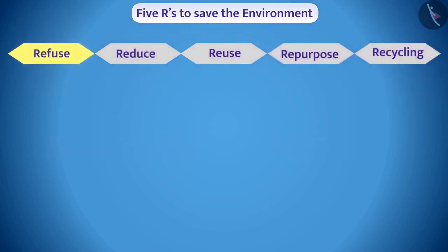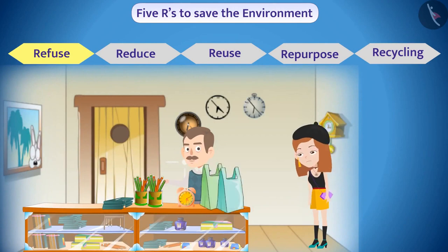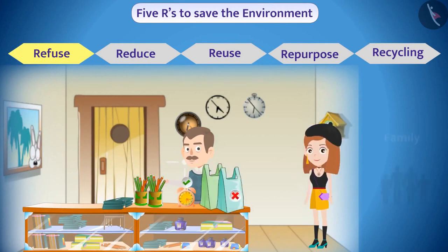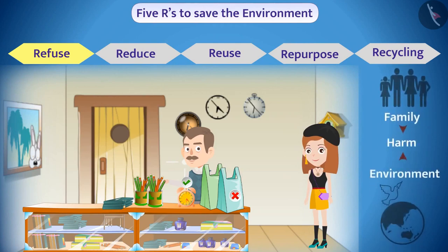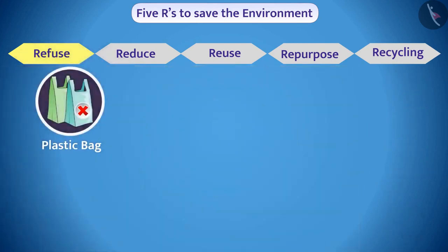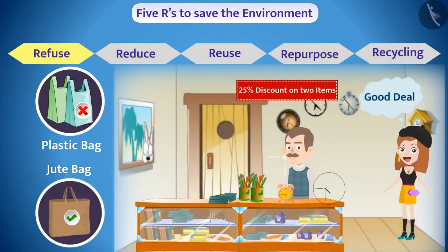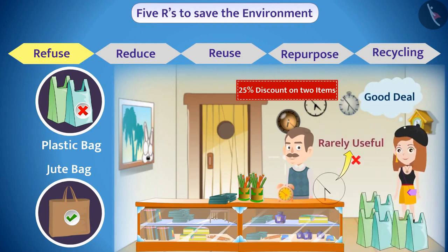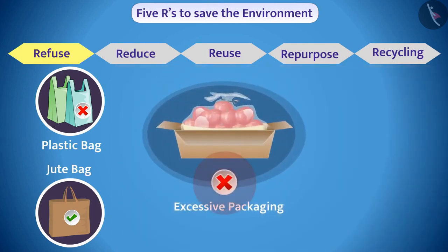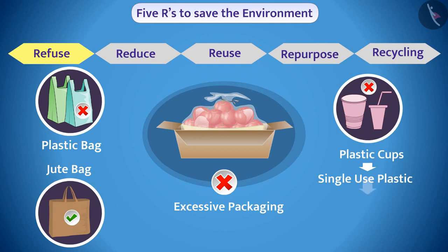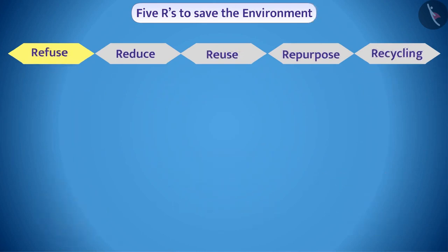The first R is Refuse. While buying things, we should refuse to take all those things which can harm the family and environment. For example, we can refuse to take plastic bags; instead we can use cloth or jute bags. We can avoid buying items which are rarely useful to us, deny excessive packaging, and refuse items like plastic cups which cannot be used again.